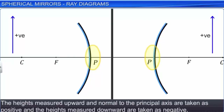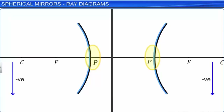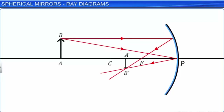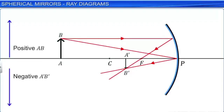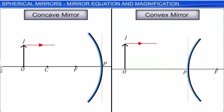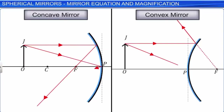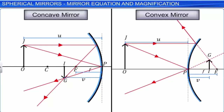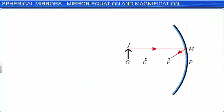When object AB is placed beyond C of a concave mirror, an inverted image A'B' is formed. The length of the object is positive and the length of the image is negative. With the proper sign convention, we can use a single formula for all possible cases. The mathematical relationship between object distance u, image distance v, and the focal length f of a mirror is called the mirror equation. Let us derive the mirror equation for the specific case where the object is placed beyond C of a concave mirror. Let OJ be the object and IG be its image.